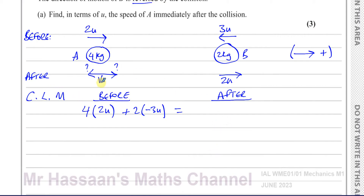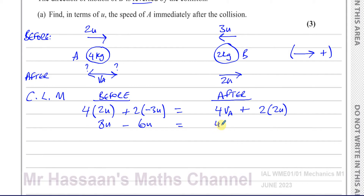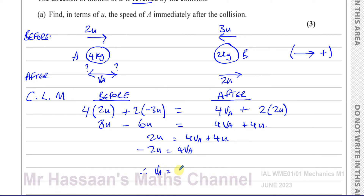The only unknown here is VA. So we multiply these out: 8u minus 6u equals 4VA plus 4u. That gives 2u equals 4VA plus 4u. Subtracting 4u from both sides: minus 2u equals 4VA. Therefore VA equals minus 2u over 4, so VA equals negative one-half u meters per second.